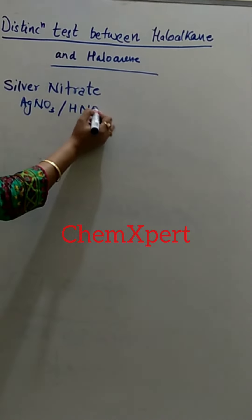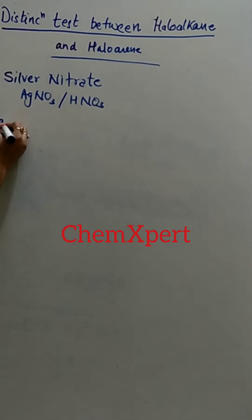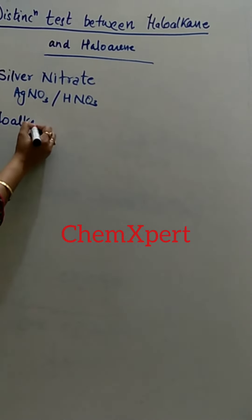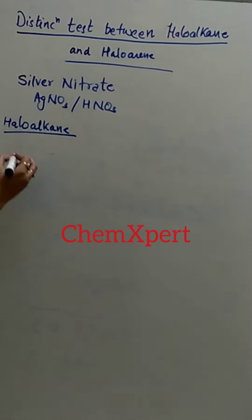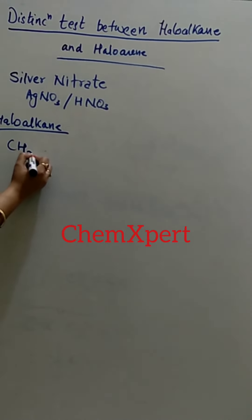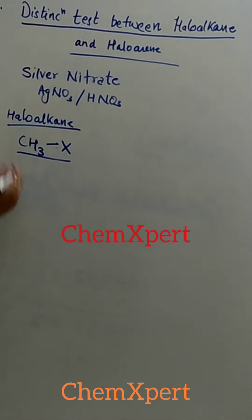Now haloalkane, or any halogen compound which contains a CX bond, like CH3X. So this is the part of haloalkane.